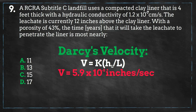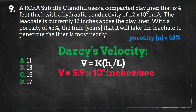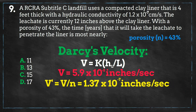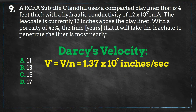Next, we must account for the porosity of the clay, which is 43%. This means that the Darcy velocity is 43% of the actual flow through the clay liner. To find the actual flow, we divide the Darcy velocity by 43%, and we get an answer of 1.37 times 10 to the negative 7 inches per second.